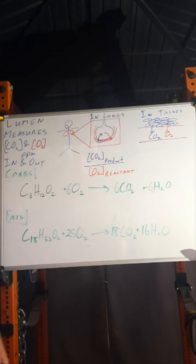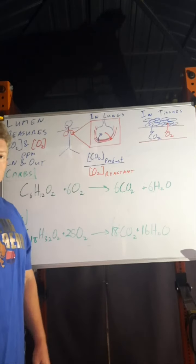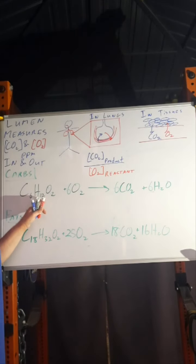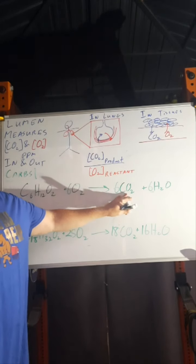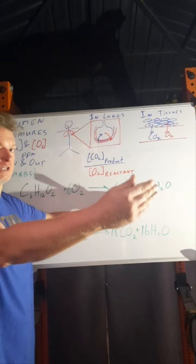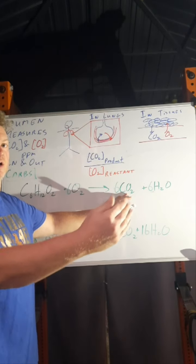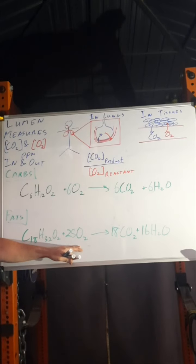The ratios of oxygen consumed for the metabolism compared to the carbon dioxide that is released from the metabolism can give us an idea of which is being consumed.